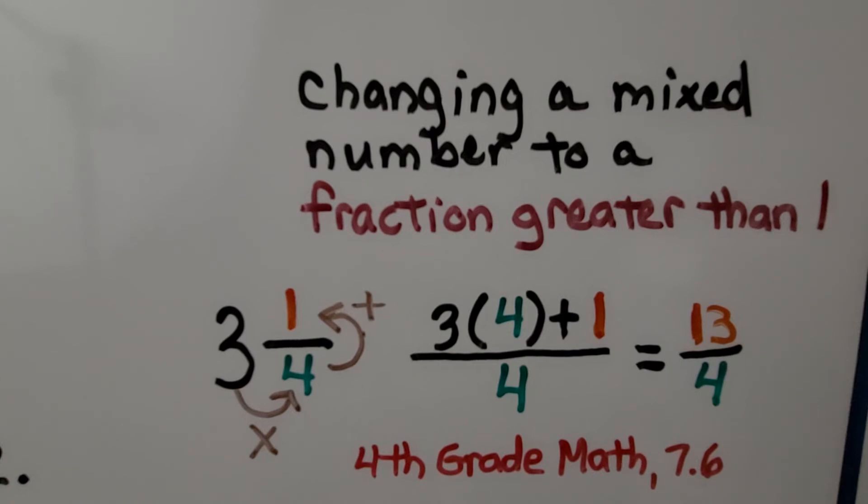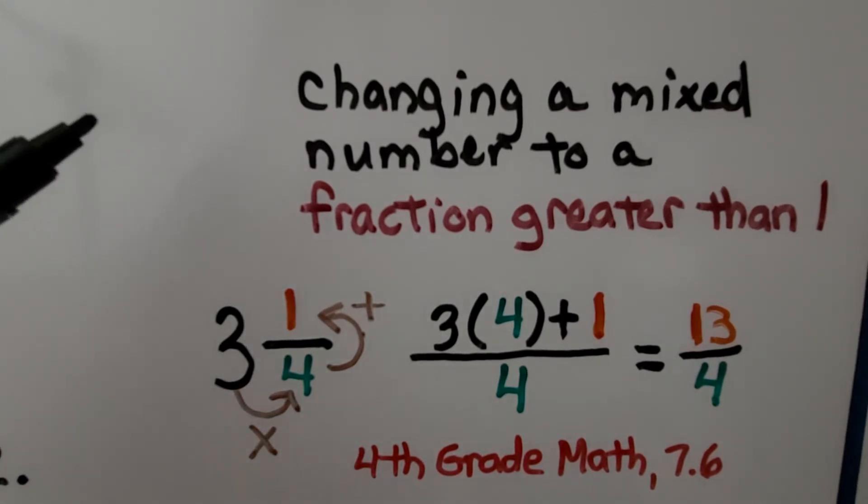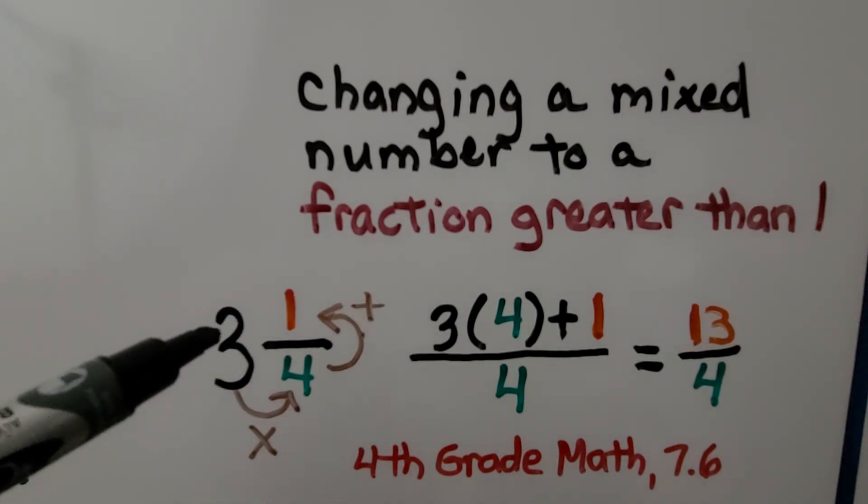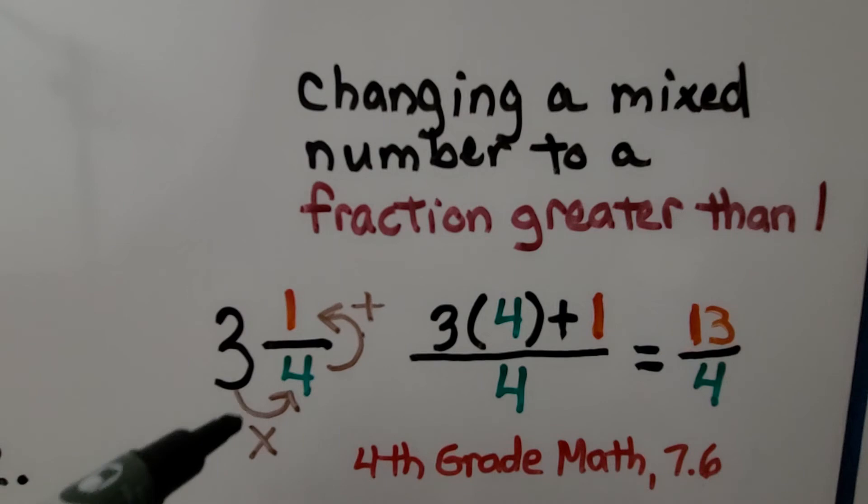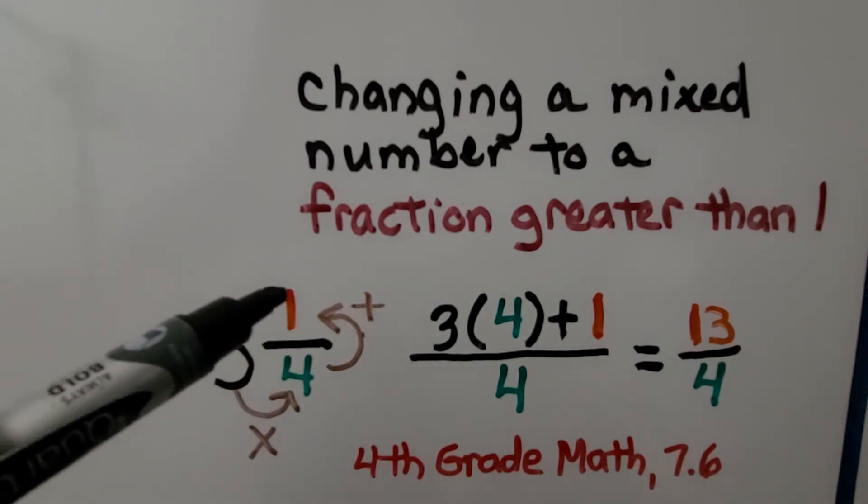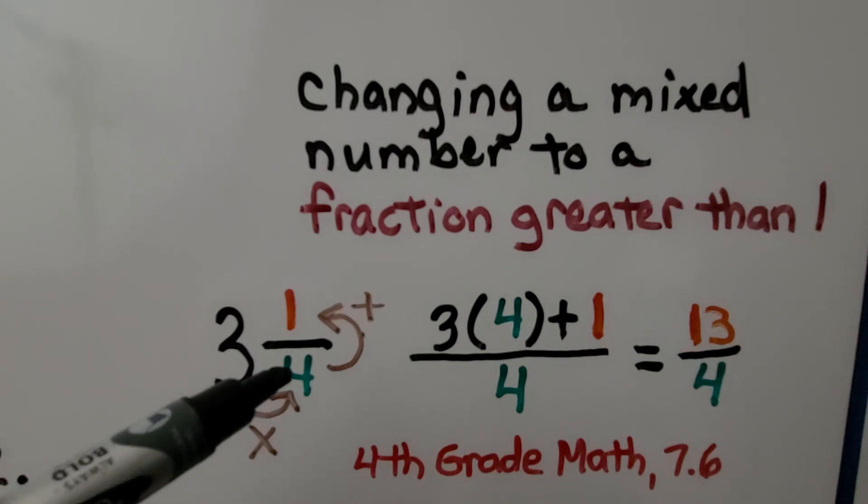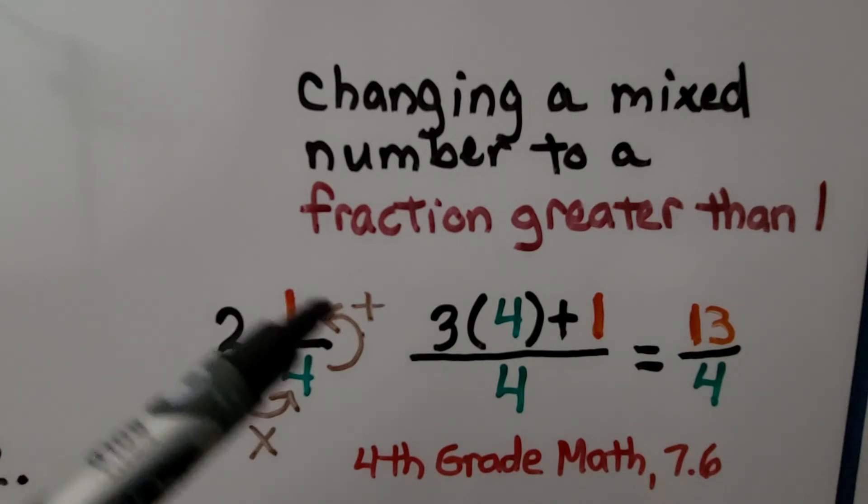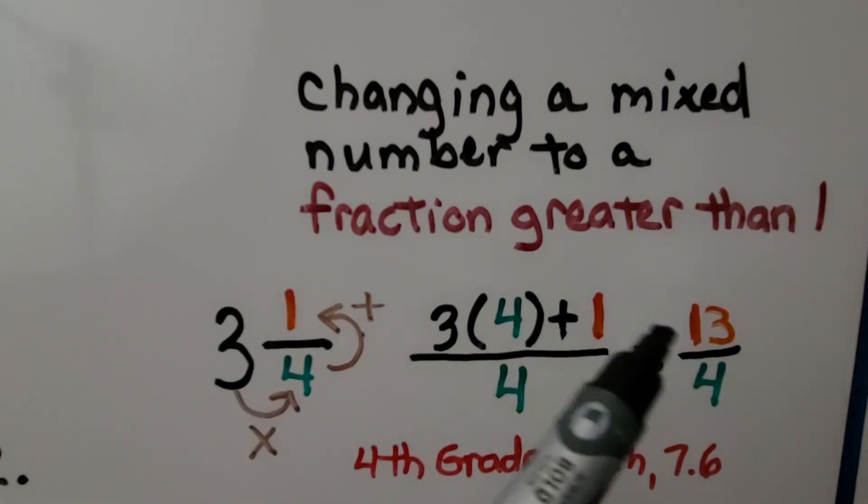And also from fourth grade math, we learned how to change a mixed number to a fraction greater than 1. If we have 3 and 1 fourth, we do the 3 whole multiplied to the denominator. Then we add the numerator and we write it over that denominator. So we would have 3 times 4 plus 1. That would be 12 plus 1 is 13. We write it over that denominator. It's 13 fourths. If you don't remember how to do that, there will be a link in this description to video 7.6 from that playlist.